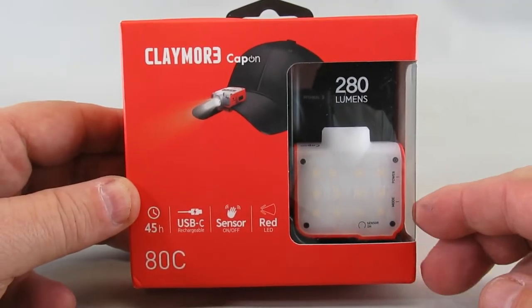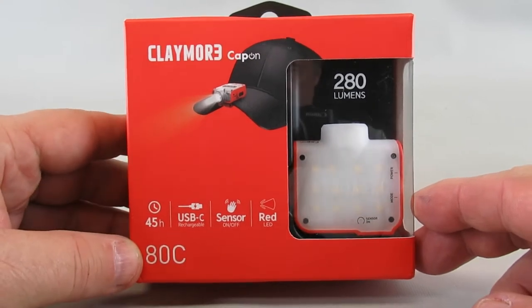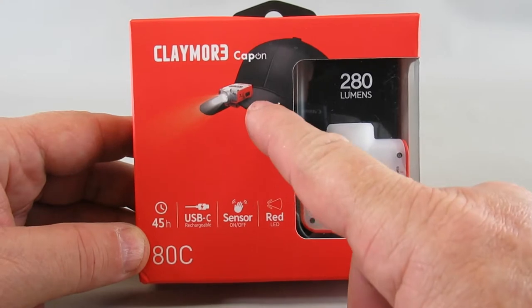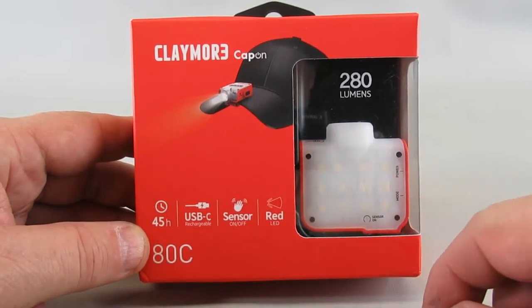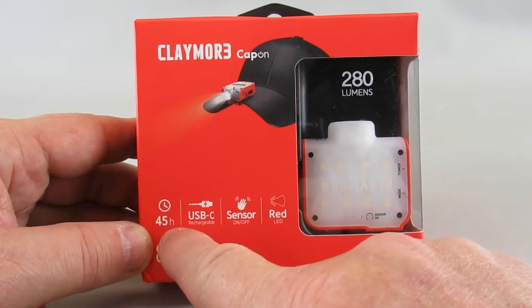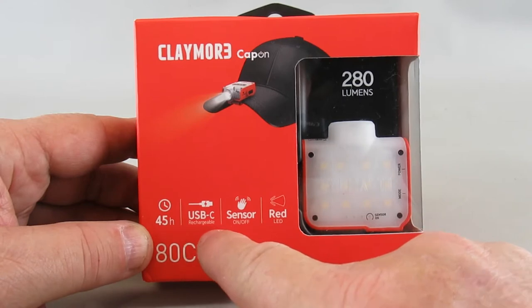Today I'm doing an unboxing and quick review of this Claymore Cap On 80C model, a light that clips onto a hat or anything else. It's rechargeable with up to 45 hours duration, has USB-C fast charging, and includes a built-in sensor for hands-free on/off control.